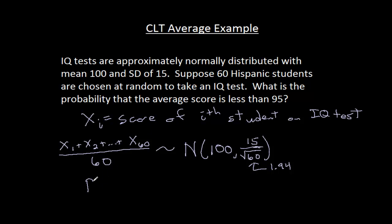Now we want to know the probability that this average is less than 95. Well this random variable is normally distributed, so I know how to do that. I go compute the z-score for 95.